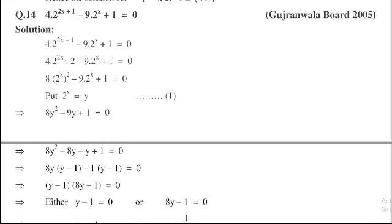This is most relevant for paper's point of view. So let's start. The problem is: 4·2^(2x+1) - 9·2^(x+1) = 0.